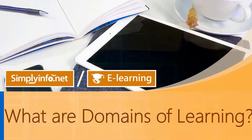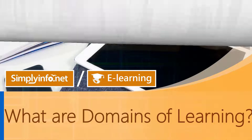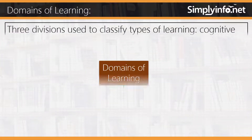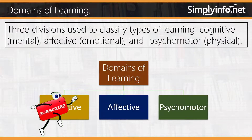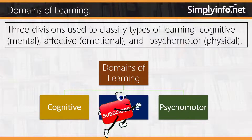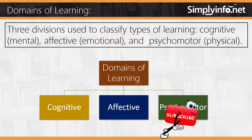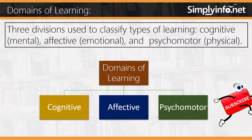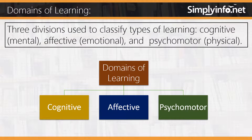What are domains of learning? Three divisions used to classify types of learning: Cognitive (mental), Affective (emotional), and Psychomotor (physical).